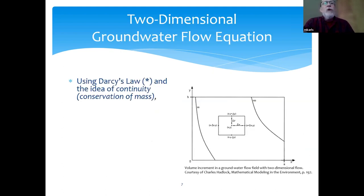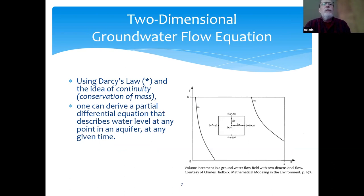So if you use Darcy's law and the idea of continuity or conservation of mass, you can derive a partial differential equation that describes water level at any point in an aquifer at any given time. This is the two-dimensional groundwater flow equation.